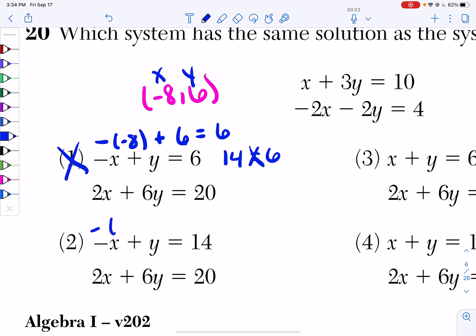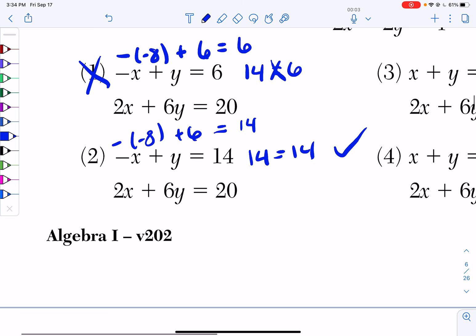So I do negative negative 8 plus 6 equals 14. Negative negative 8 is 8. 8 plus 6 is 14. 14 equals 14, so that works. So it actually, so far right now, could be choice 2. Now I plug it into my second equation.